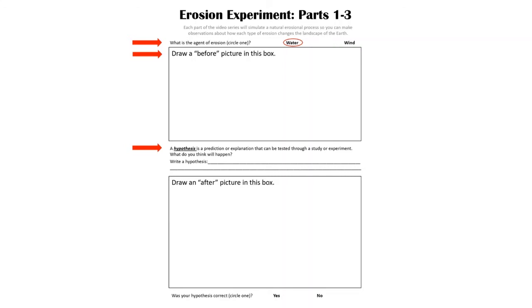After we've done these three parts of the worksheet, we will run the model. When the model is done, then we will draw an after picture. By drawing an after picture, we'll be able to compare it to our before picture and observe all the changes that have happened to our landscape. We'll also be able to review our hypothesis and answer our last question. Was your hypothesis correct? So in other words, did the landscape change in the way that you expected? Or were you surprised by the results of our model? Again, you're just going to circle yes or no to whether your hypothesis was correct.